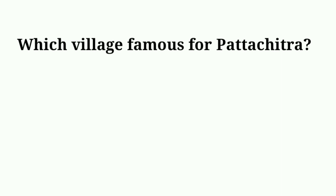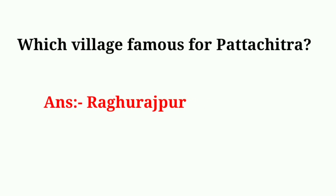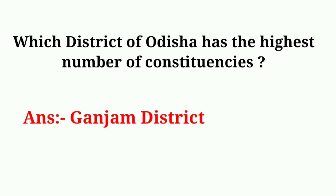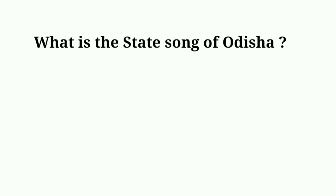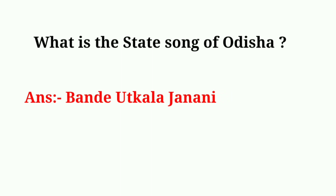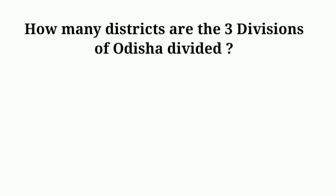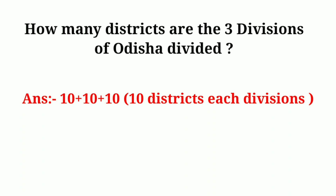What is Shatpada famous for? Answer: Dolphin. Which village is famous for Pattachitra? Answer: Raghurajpur. Which district of Odisha has the highest number of constituencies? Answer: Ganjam district. What is the state song of Odisha? Answer: Vande Utkala Janani. How many districts are the three divisions of Odisha divided into? Answer: 10 districts each division.